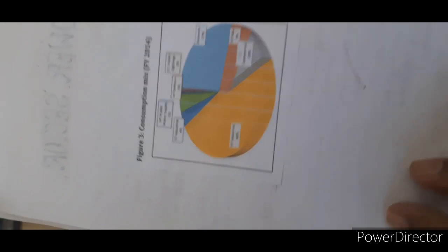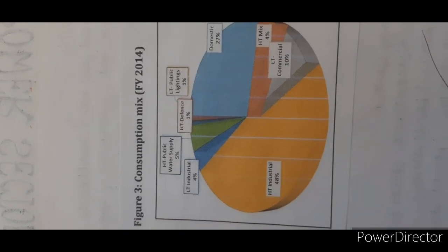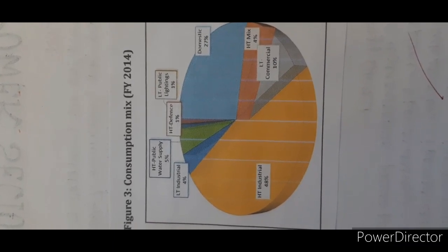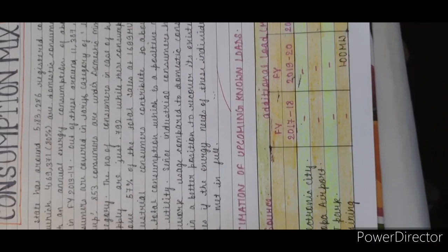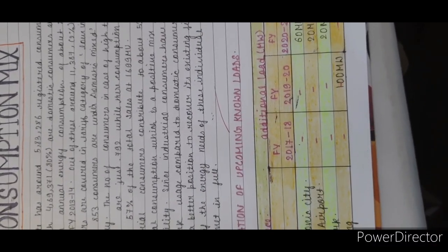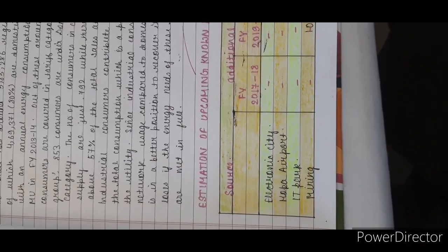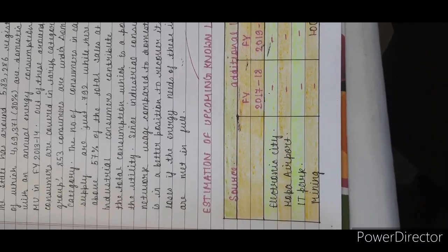Then the consumption mix section is there for financial year 2014. That particular part covers the consumption mix, and there is also an estimation of upcoming known loads and consumption — electricity for the airport, IT park, mining, etc.